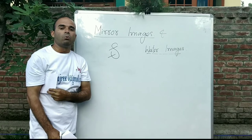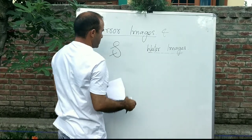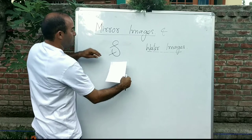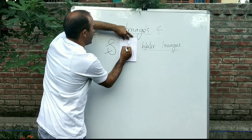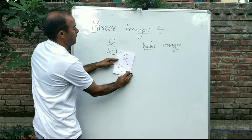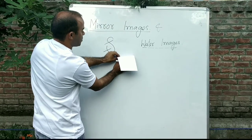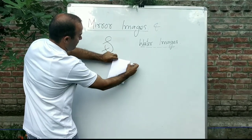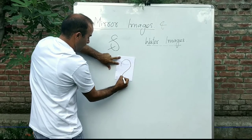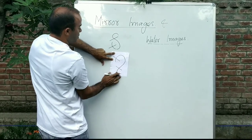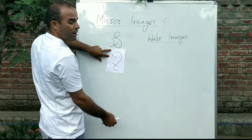Next we have the water image. If you can see this figure, we will make a paper strip on this one — which is the water image. The water image is horizontally rotated, but the water image will be vertically turned. When we have vertically turned this figure, we will trace the water image.